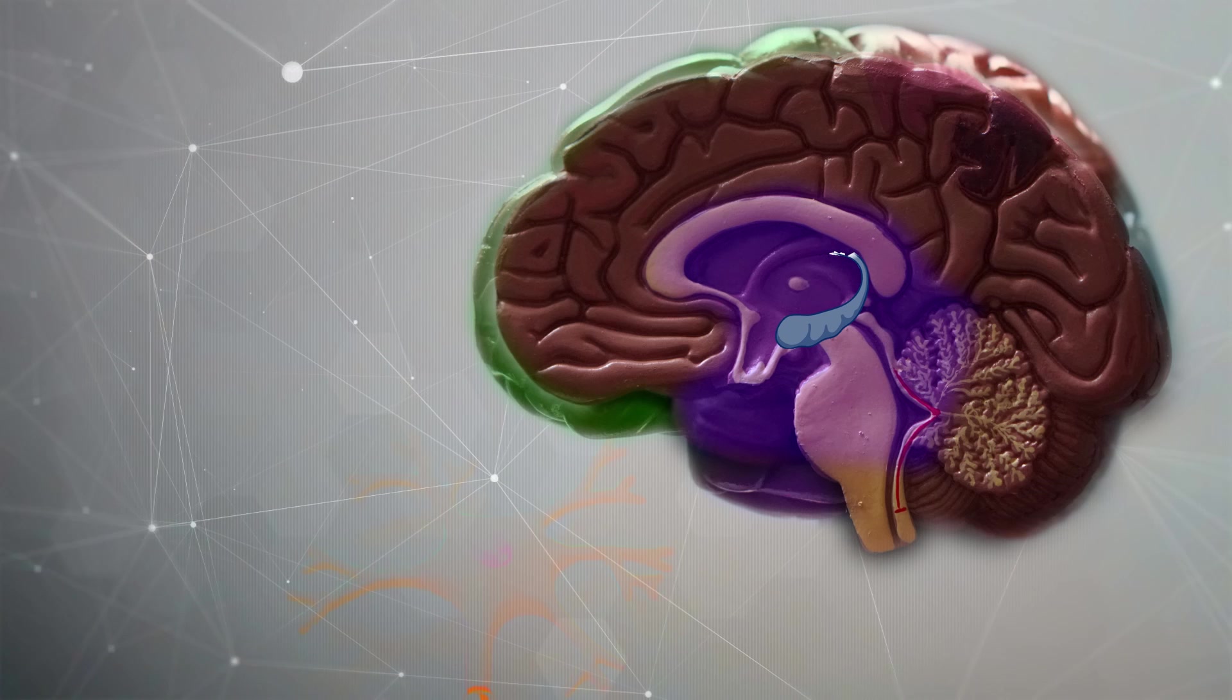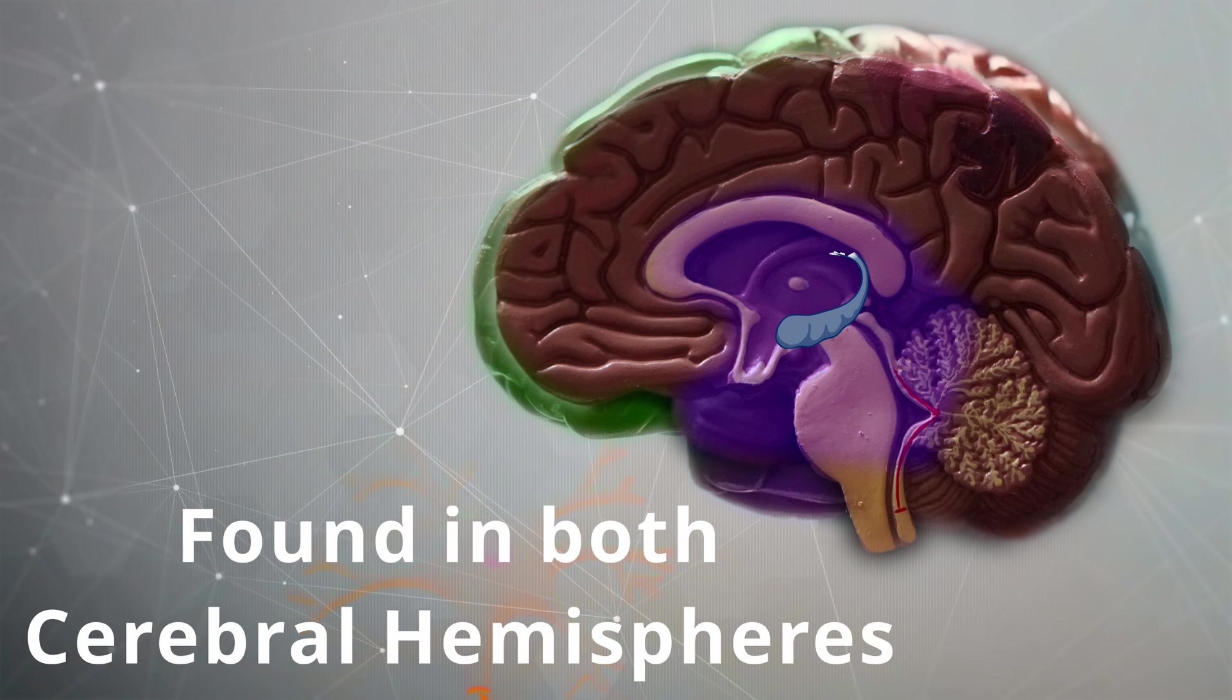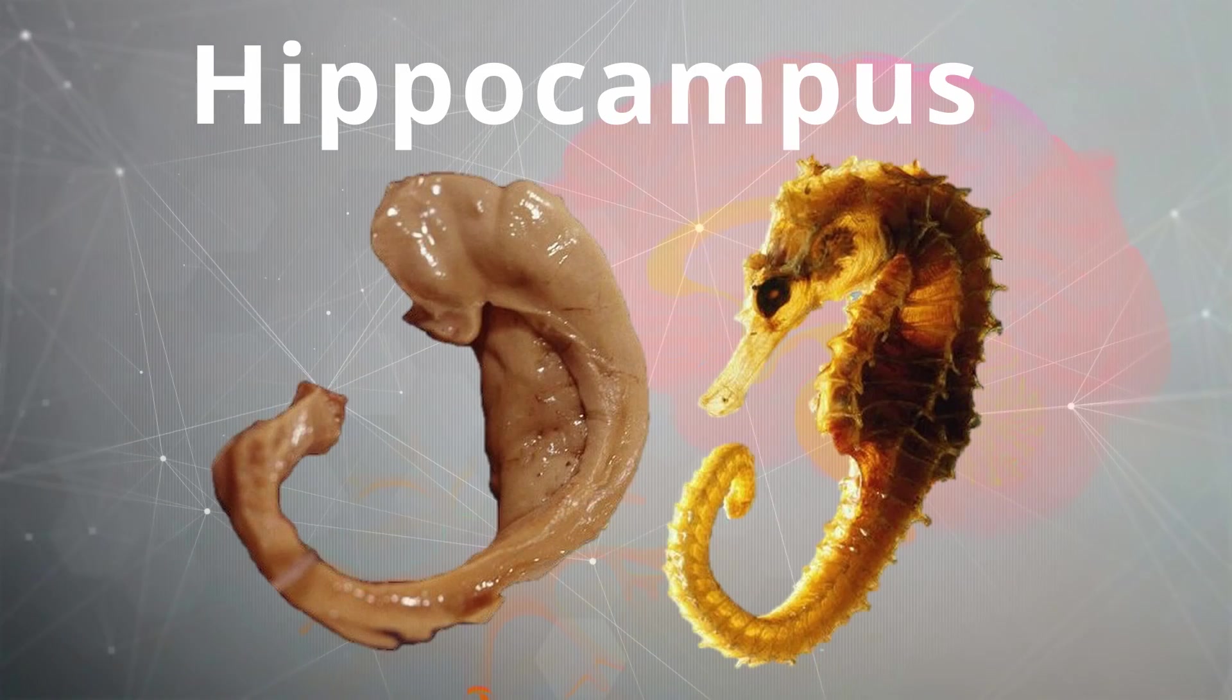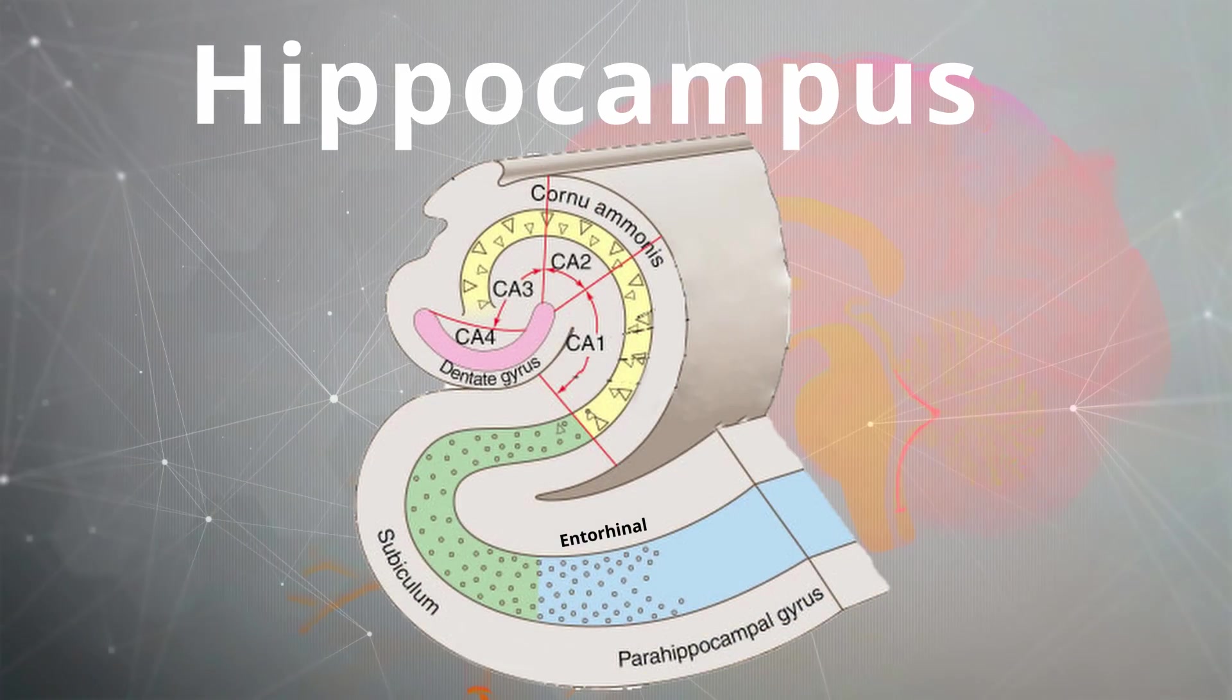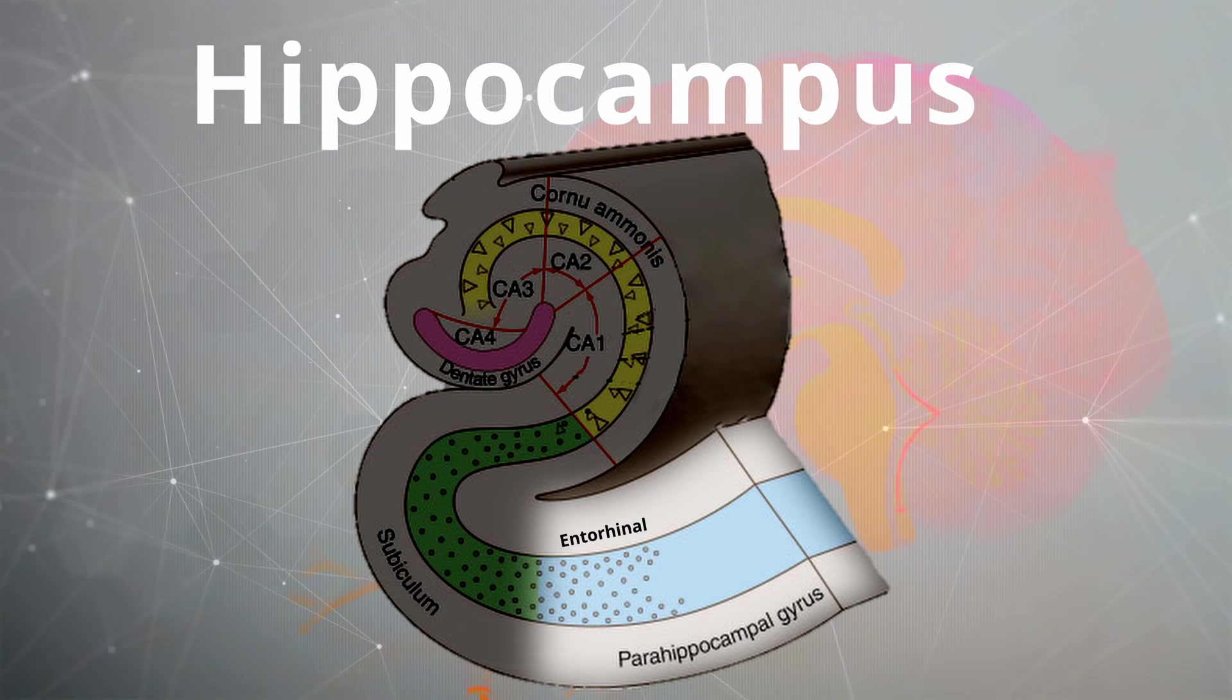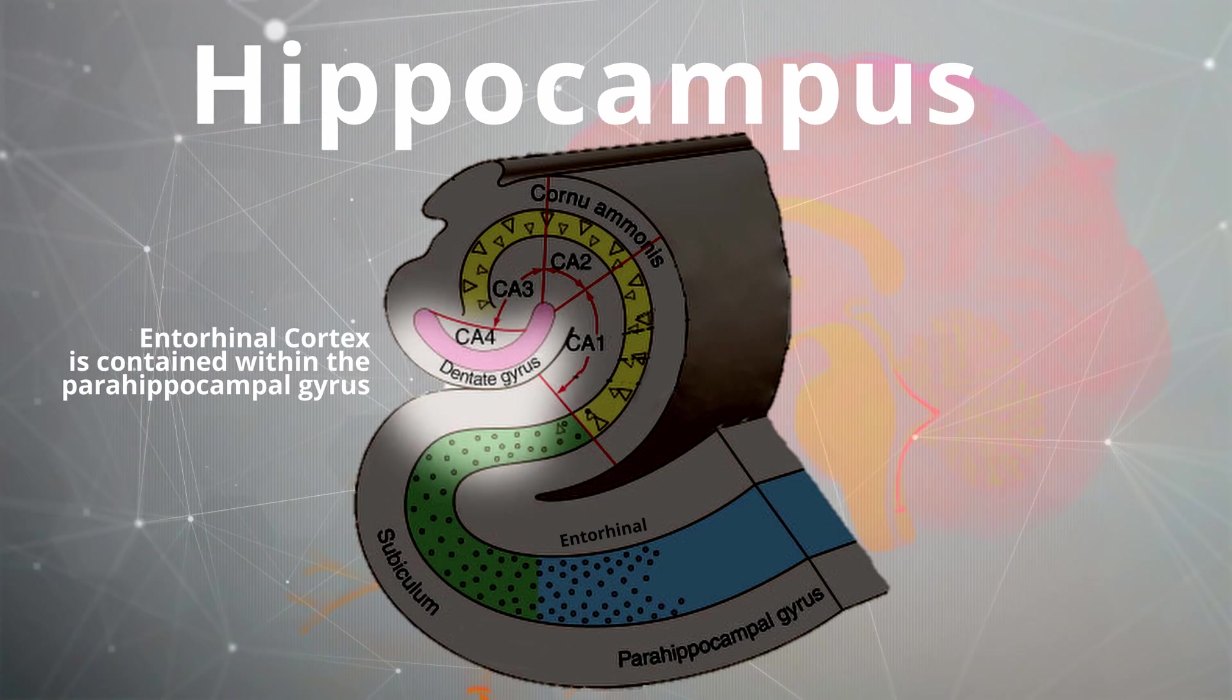This is a paired structure, with one found within each cerebral hemisphere. The word hippocampus is Greek for seahorse as it takes on this shape. It's part of the hippocampal formation comprising of the parahippocampal gyrus, entorhinal cortex, the subiculum and the dentate gyrus.